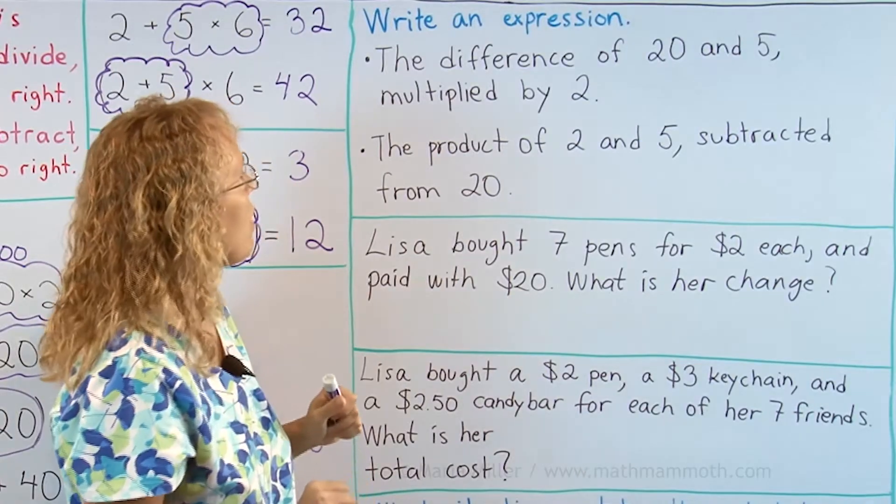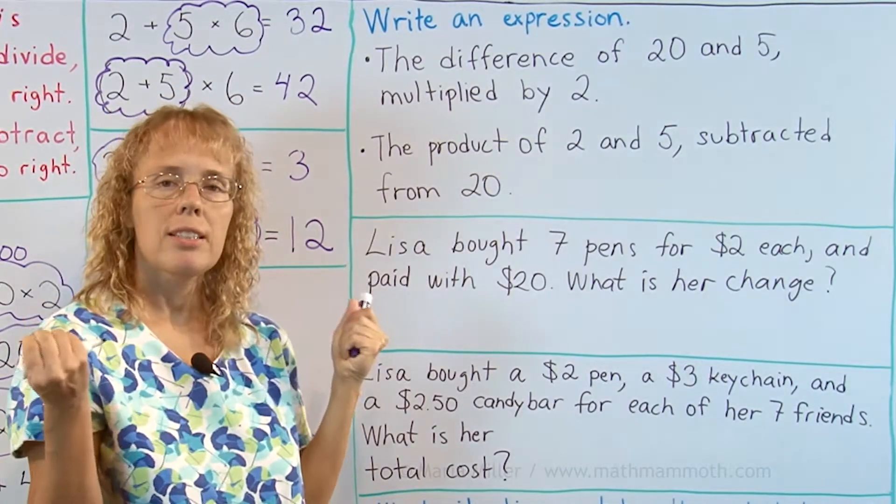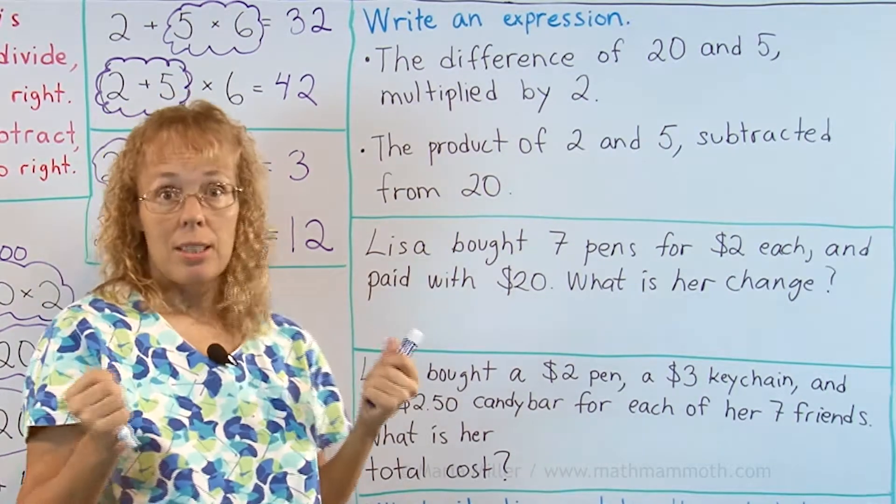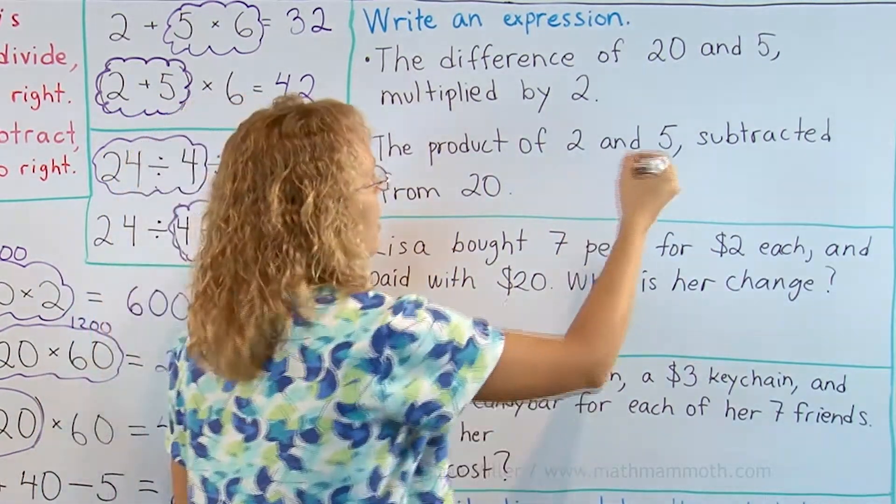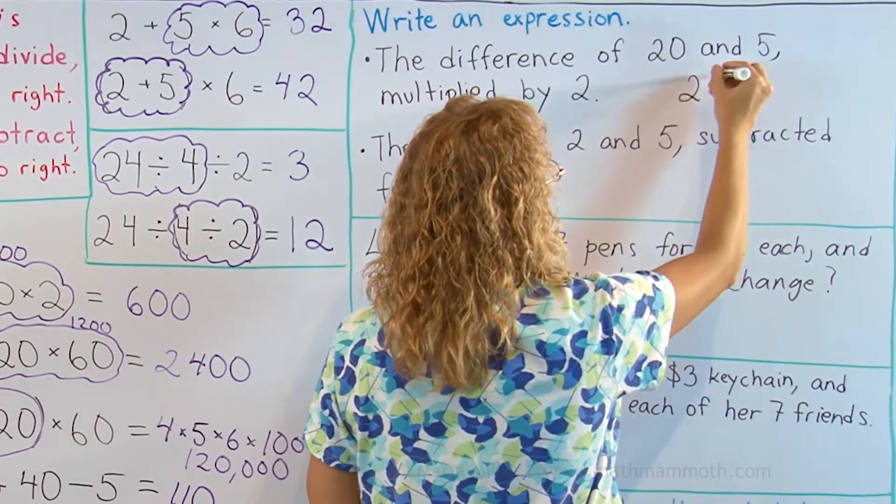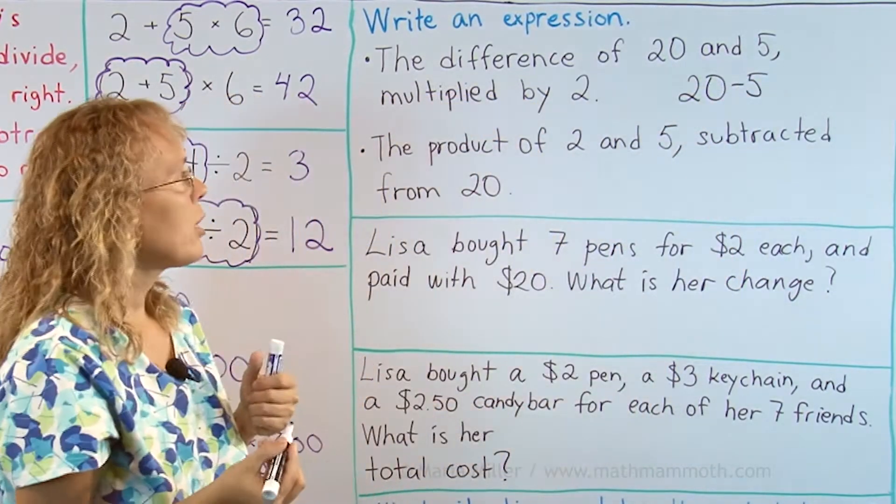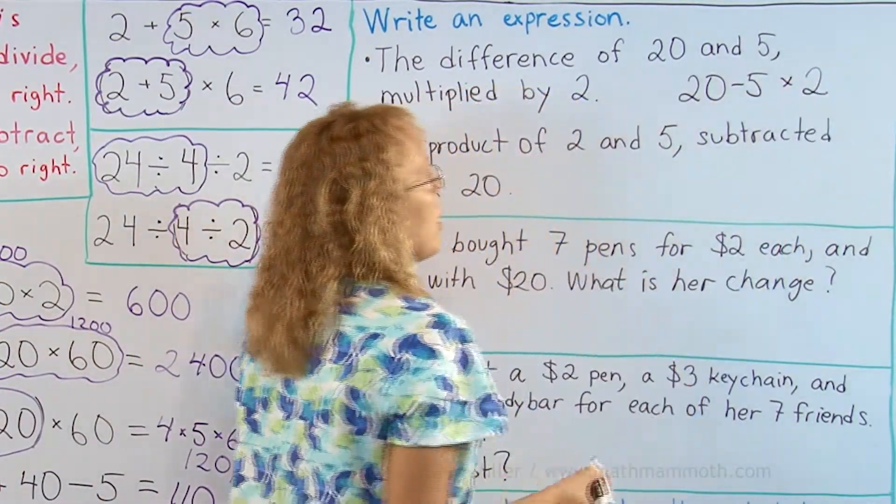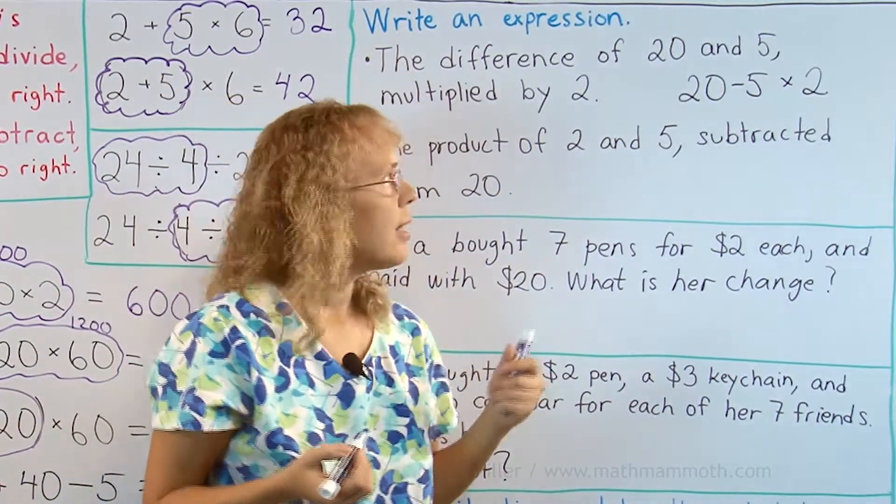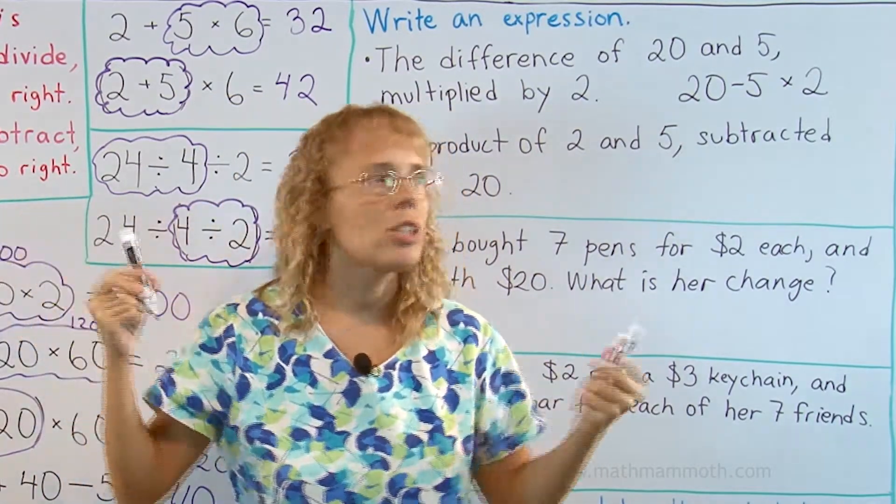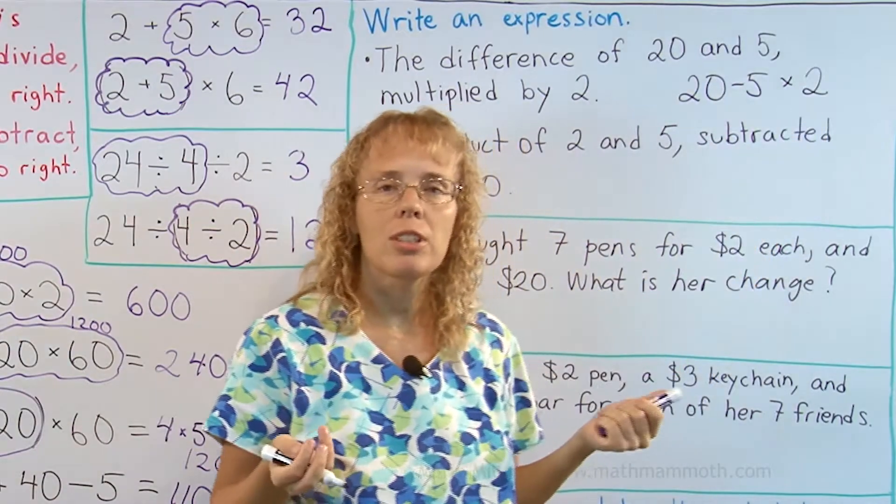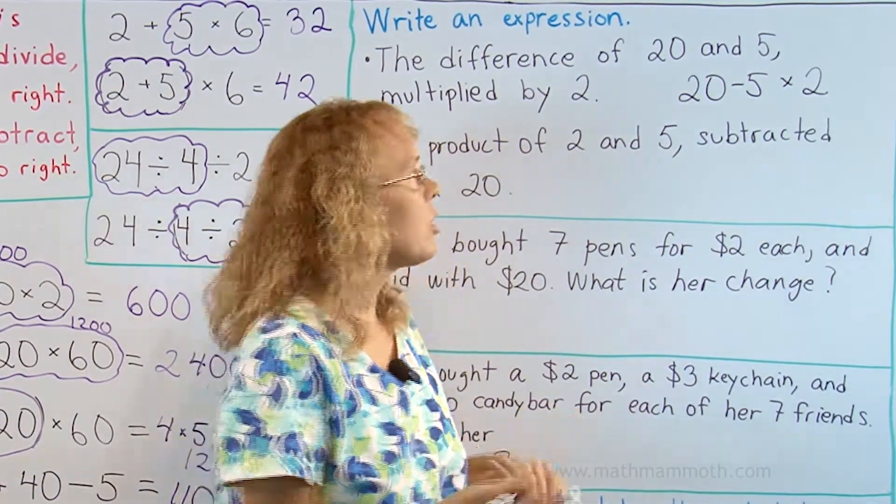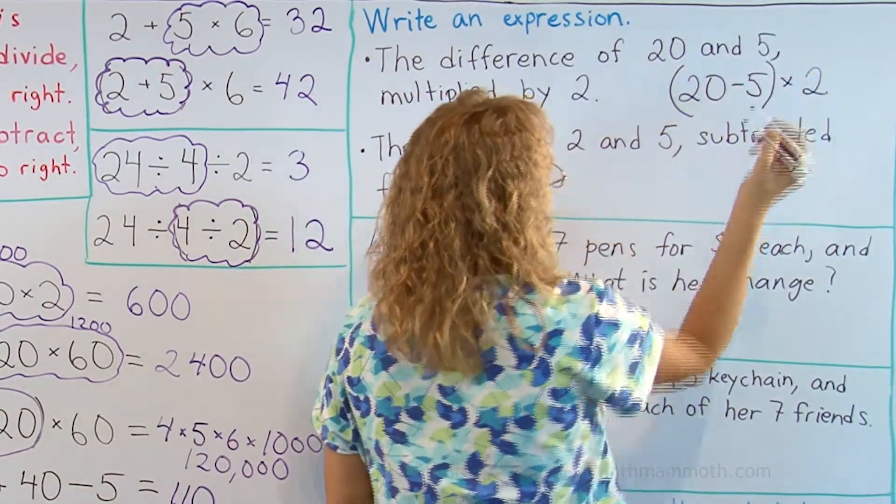The difference of 20 and 5 multiplied by 2. How would I write it as a number sentence or expression? The difference means subtraction, right? So there's 20 minus 5 somewhere there, and then it is multiplied by 2. But if I just leave it at that, then following the order of operations in this expression, 5 times 2 would be done first, which is not what I want. I want the difference, the subtraction done first. So I have to put parenthesis into my expression.